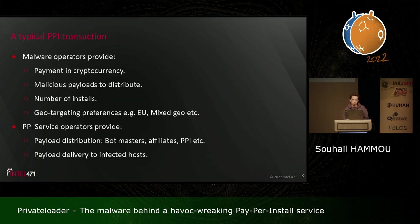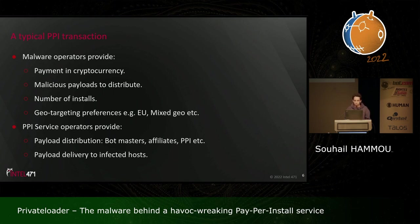A typical Pay-Per-Install transaction works like this: the operator provides upfront cryptocurrency payment, the malicious payload or payloads to distribute, the number of installs they want (usually in the hundreds or thousands), and geo-targeting preferences such as a continent, region, or country. There is also a 'mixed geographic locations' option which goes for cheap because it covers countries from all over the world. More restrictive geographic options are more expensive because acquiring bots in specific locations is more challenging.